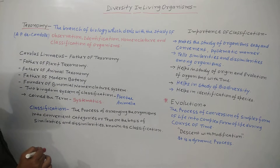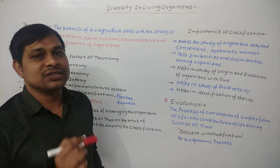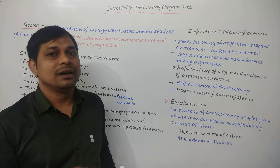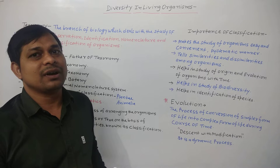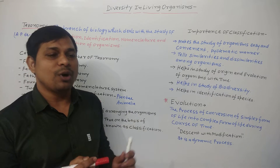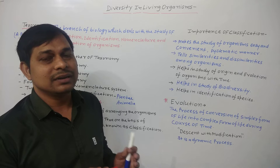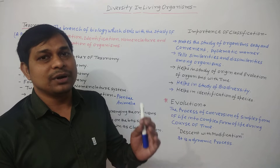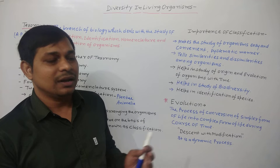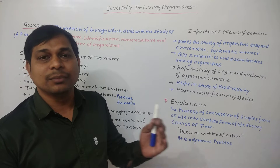Taxonomy is the branch of biology which deals with the study of observation, identification, nomenclature, and classification of organisms. In Taxonomy, we observe the organism, then its identification, then we provide a particular name to them — that is the nomenclature — and then classification means providing a proper place in the biological world.